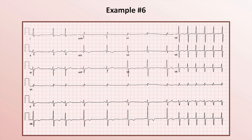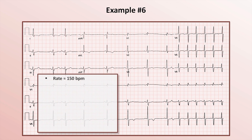Example 6. The tachyarrhythmia begins just in the last quarter of the EKG. The rate is about 150. It is regular and narrow complex.